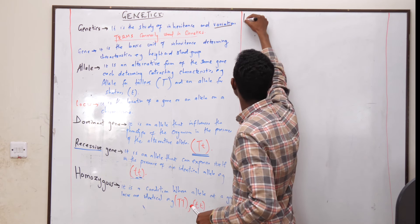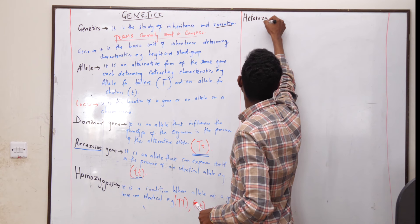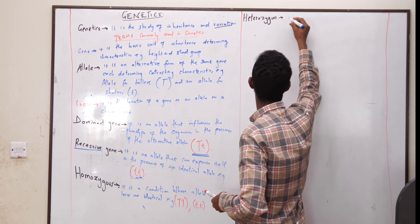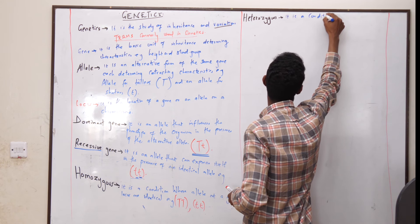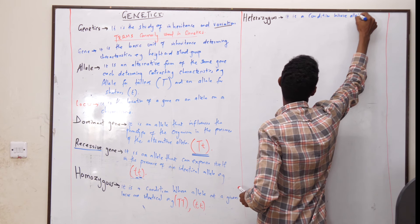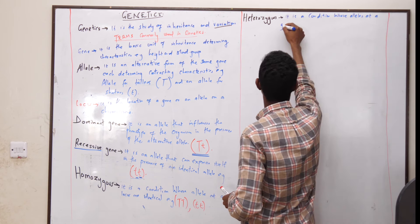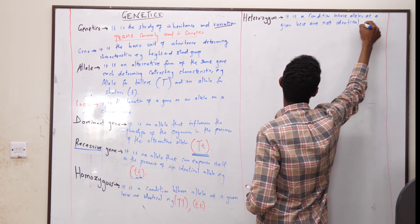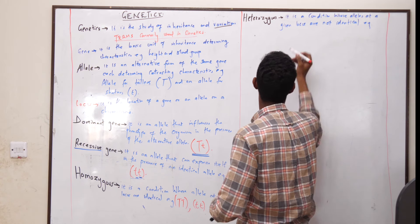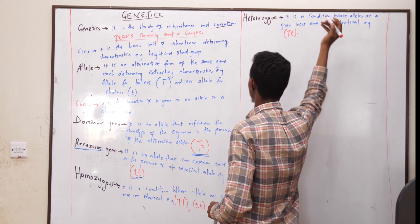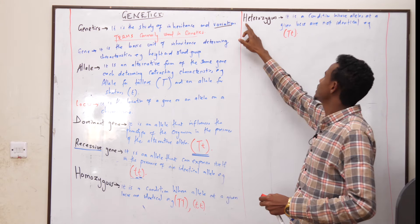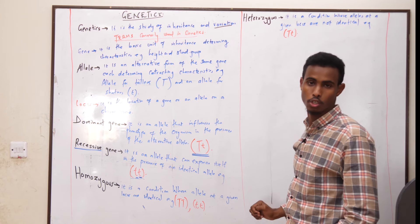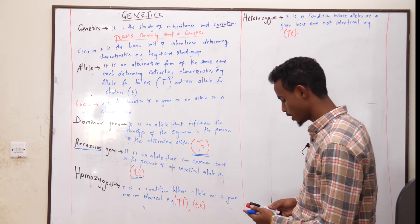We also have another condition called the heterozygous condition. Heterozygous is a condition where alleles at a given locus are not identical. For example, Tt. As you can see, this is a heterozygous condition because both alleles — the allele for tallness and the allele for shortness — are not identical, meaning they are different.